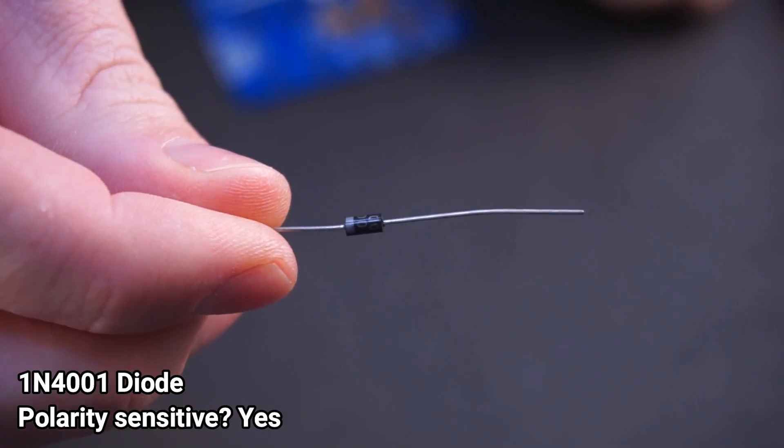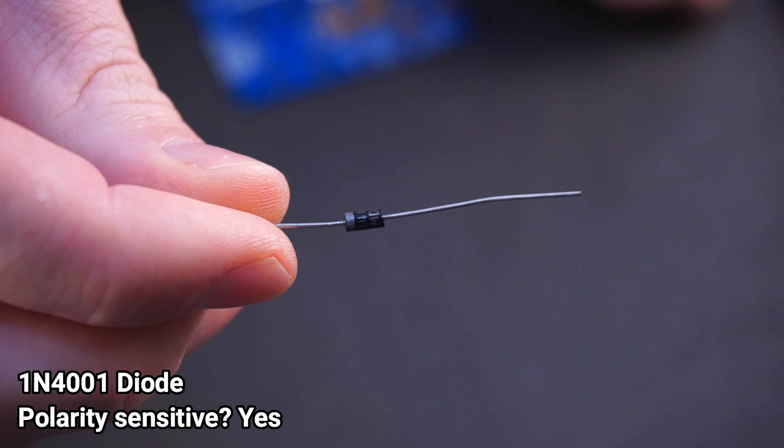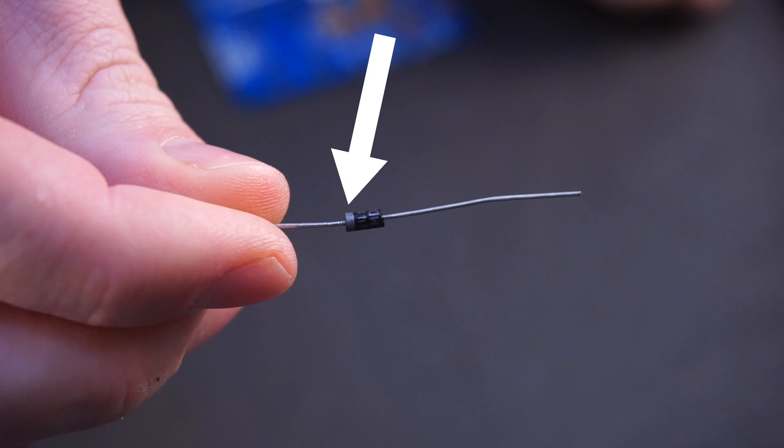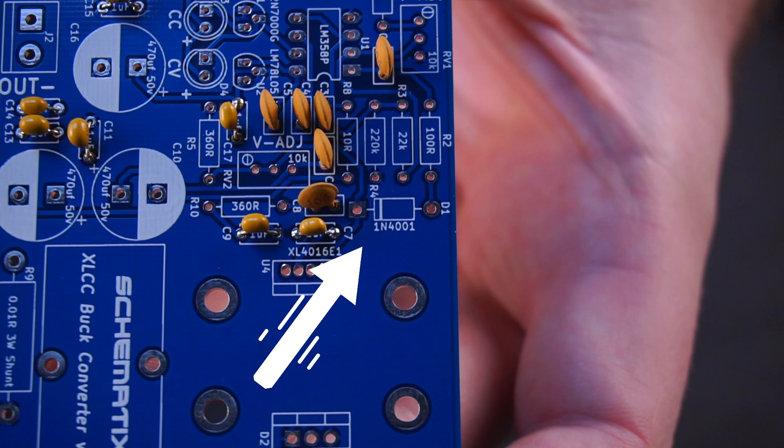Next I installed the diode. Make sure you pay attention to orientation. The diode has a silver band at one end which should be lined up with the band printed on the board.